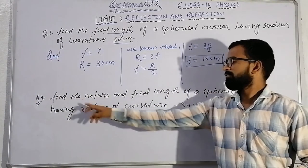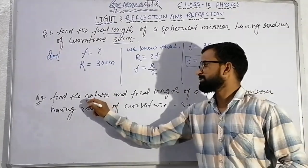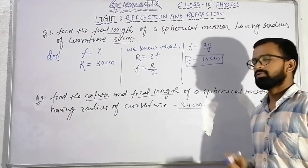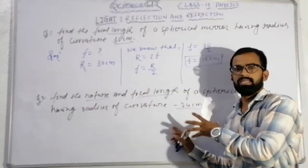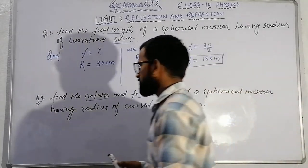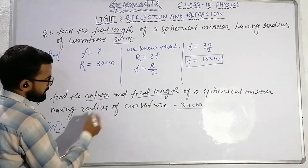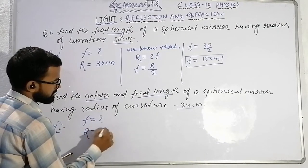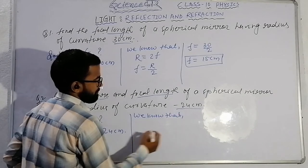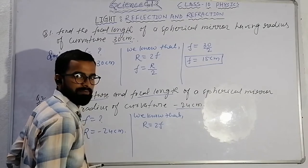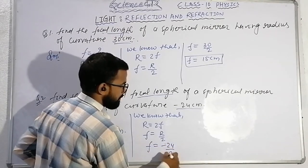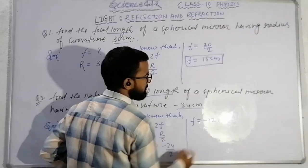The second example: Find the nature and focal length of a spherical mirror having radius of curvature minus 24 cm. We need to find out whether it is concave or convex, and find the focal length. Given: R is equal to minus 24 cm. We know that f is equal to R upon 2, so f is equal to minus 24 by 2, that is f is equal to minus 12 cm.